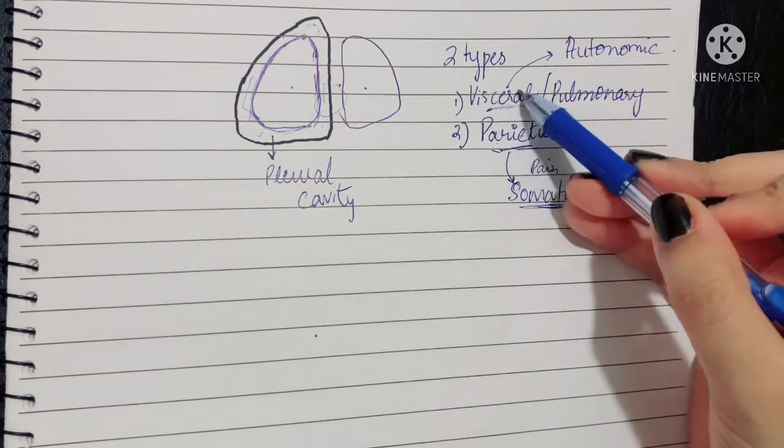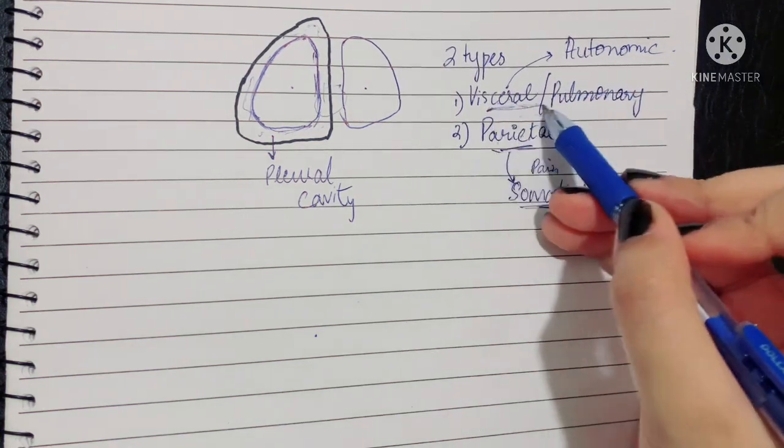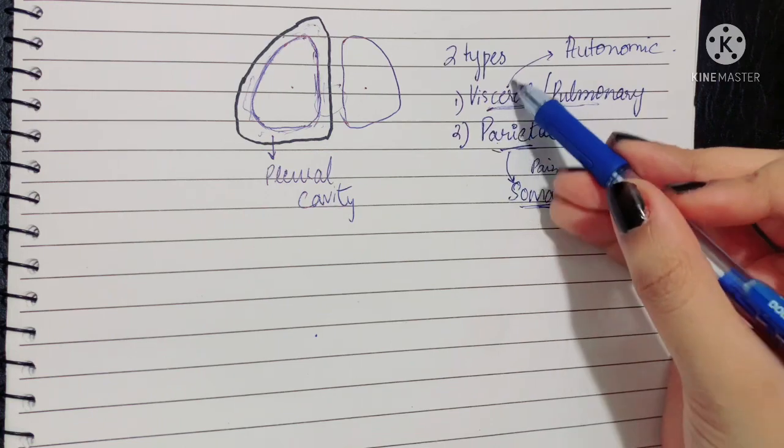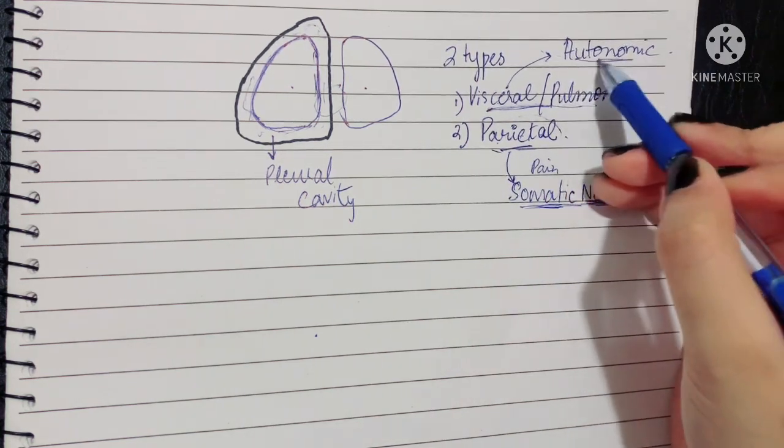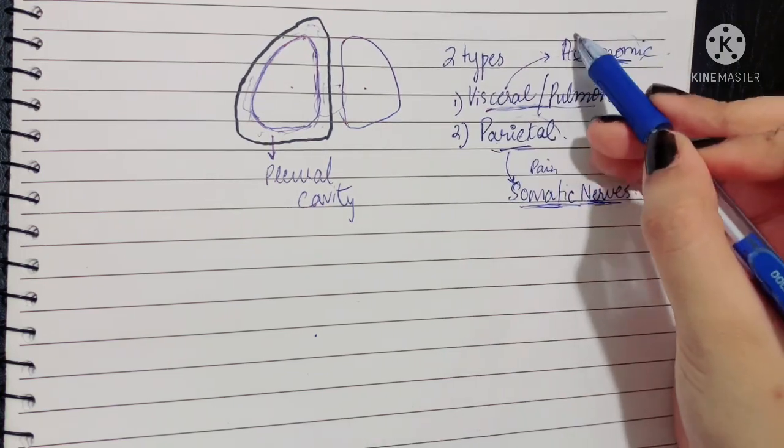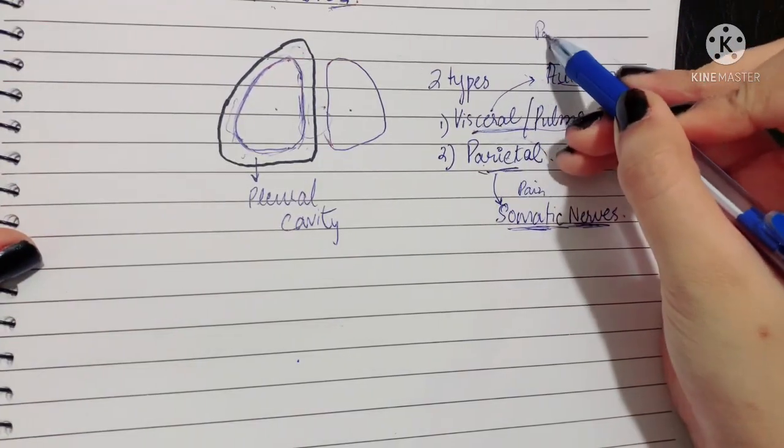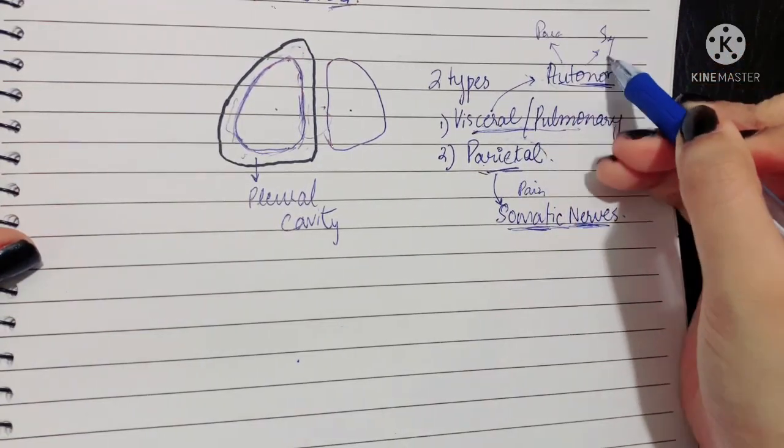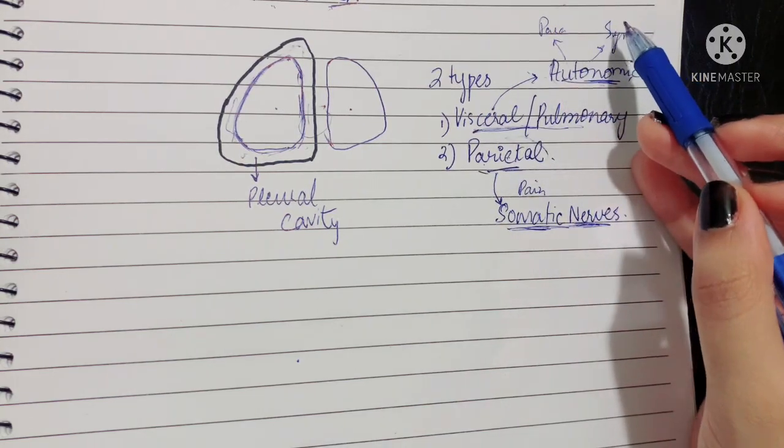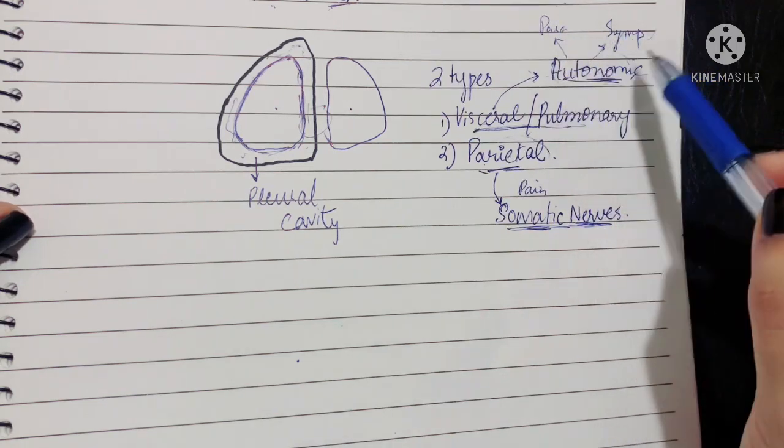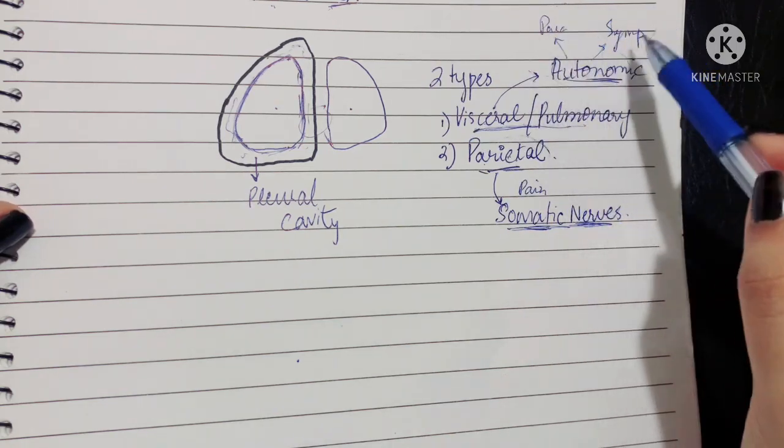However, in the case of viscera, the organs or even the visceral pleura in this case, this is not supplied by somatic nerves. It is supplied by autonomic. What does autonomic mean? Autonomic means parasympathetic and sympathetic fibers only. This means that it is only supplied by these two types of fibers, and these two types of fibers also have an important function in your lungs.